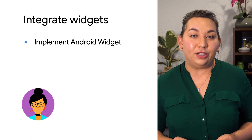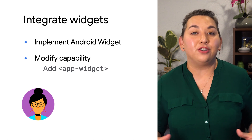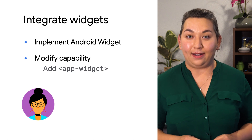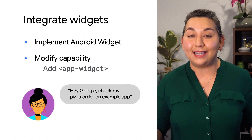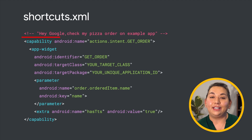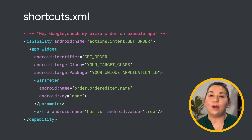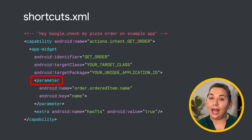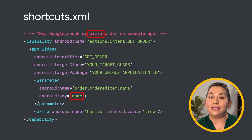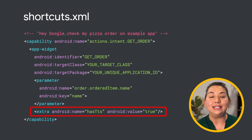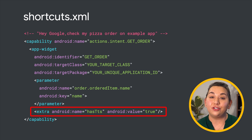After implementing a widget, you'll create or modify an App Actions capability by adding an App Widget tag. Using the prior example of checking the status of a pizza order, here is an example of a GetOrder capability with the App Widget tag. This built-in intent contains parameters which are pulled from the user's query — for example, 'check my pizza order on example app' will pull pizza as the value for the parameter called name. This data will be sent as extras via the Android Intent. Also included in the Intent Extras is the Has TTS configuration, which allows you to include custom introductions for your widgets.